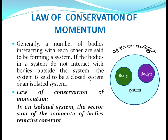You can see in the figure that body 1 and body 2 are two bodies which may interact with each other, but they together form a system which does not interact with the surrounding. Then only we can say that body 1 and body 2 form a closed system or an isolated system. In an isolated system, the vector sum of the momenta of bodies remains constant. This law states that the total momenta of the bodies inside an isolated system remains constant.